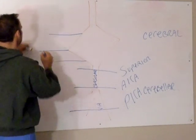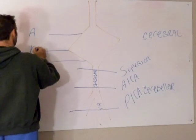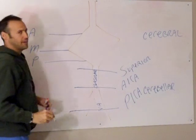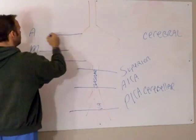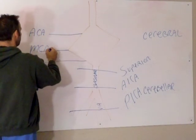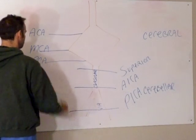The way that I remember this is AMP, just like cyclic AMP. So we have our anterior cerebral artery, we have our middle cerebral artery, and our posterior cerebral artery.